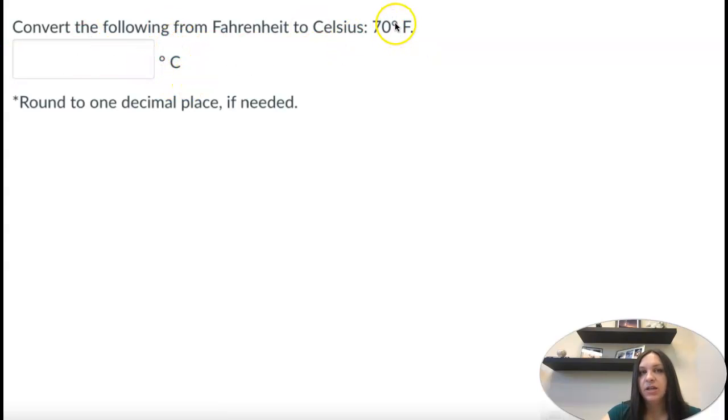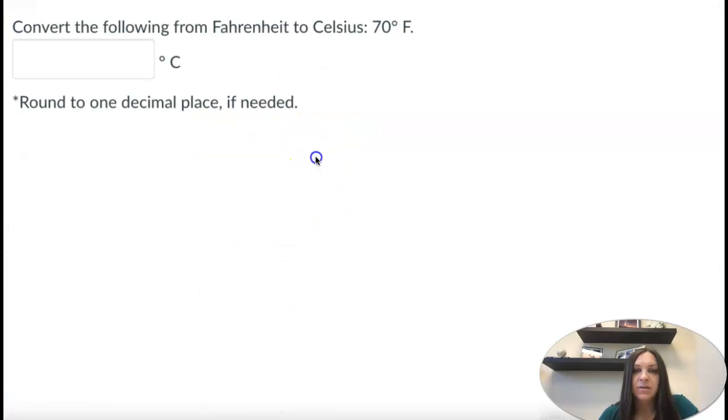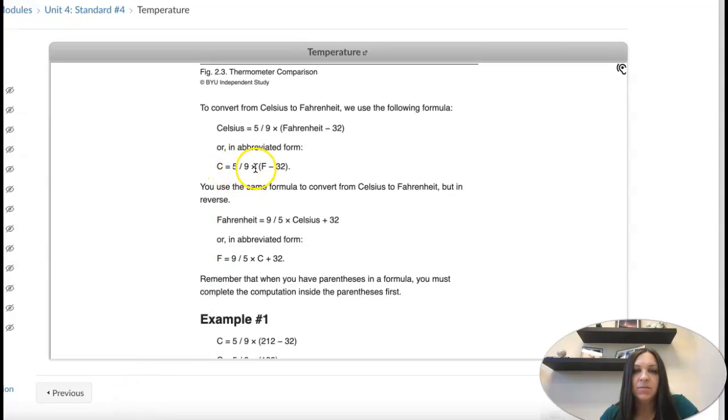So degree F means degrees Fahrenheit. Degrees C means degrees Celsius. So the formula that we need is we're given Fahrenheit, so it's this first one. So Celsius equals 5 ninths times Fahrenheit or F minus 32.